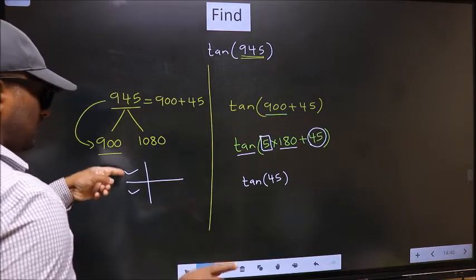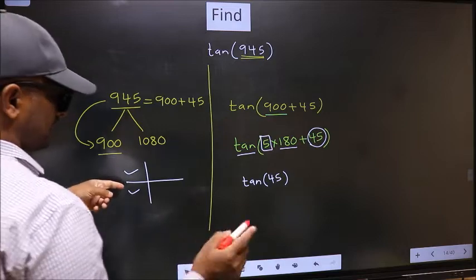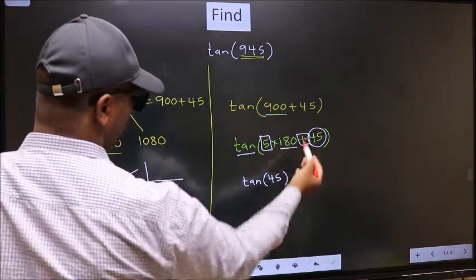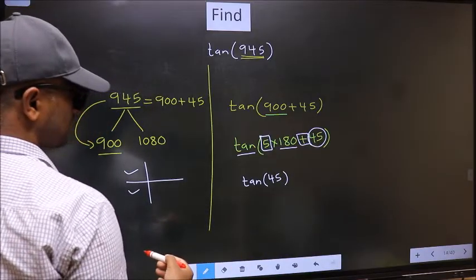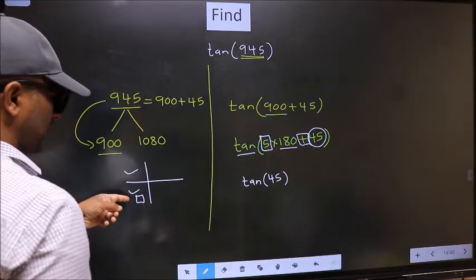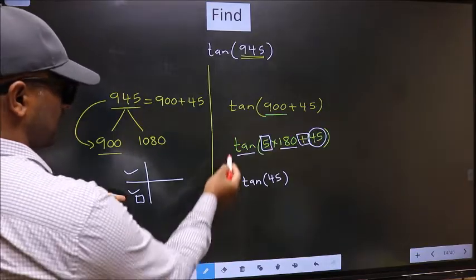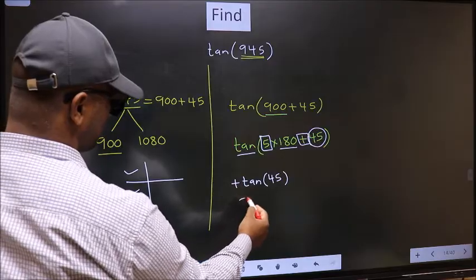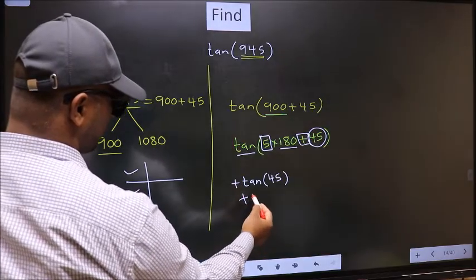So now to select the quadrant, we should look at this symbol. Here we have plus. That means angle lies in the third quadrant. And in the third quadrant, tan is positive. So we should put plus. So plus tan 45 is 1. This is our answer.